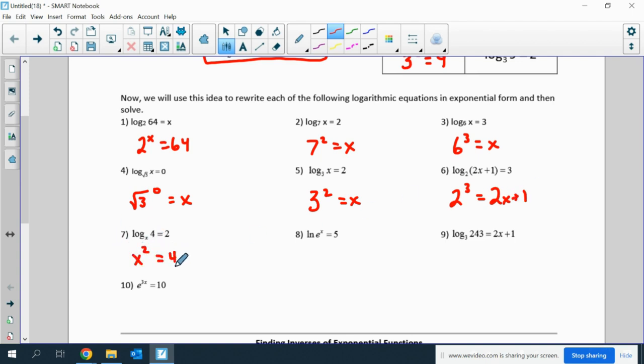Number 4 can be rewritten as square root of 3 to the 0 equals x. 5 is 3 squared equals x. 6 is 2 to the 3rd equals 2x plus 1. 7 is x squared equals 4. For number 8, if we understand what natural log is, natural log is log base e. So we have log base e of e to the x equals 5, which rewrites as e to the 5 equals e to the x. This is 3 to the 2x plus 1 power equals 243. And this one is actually in exponential form, so we're going to rewrite it in logarithmic form. That would be natural log of 10 equals 3x.